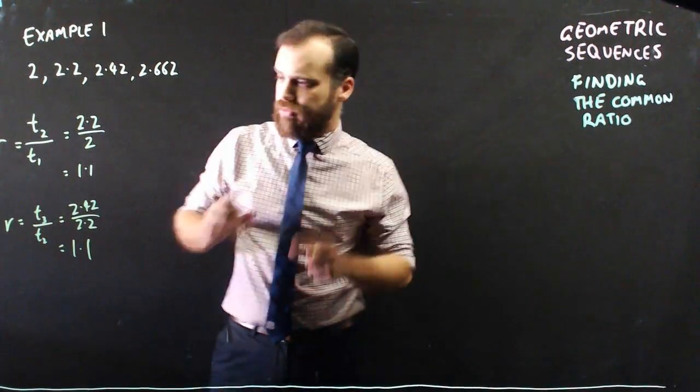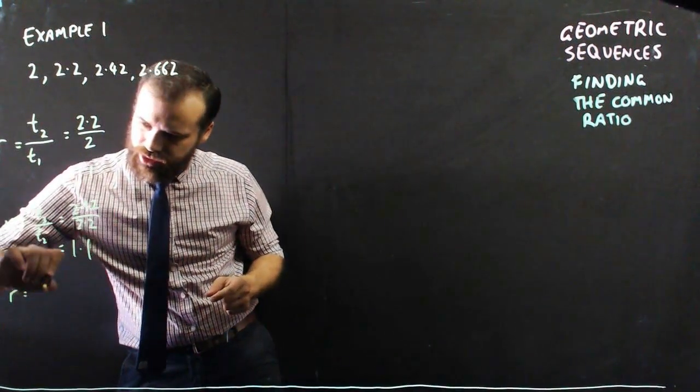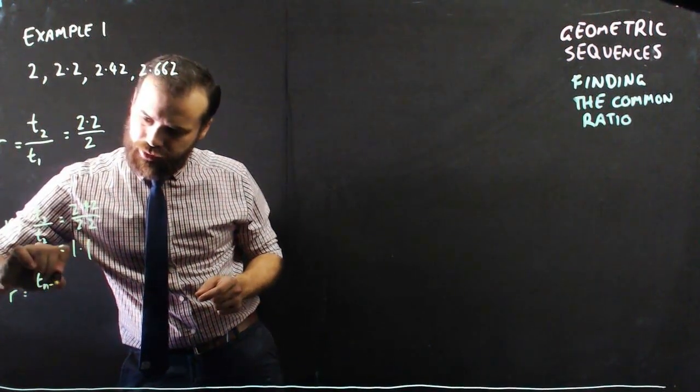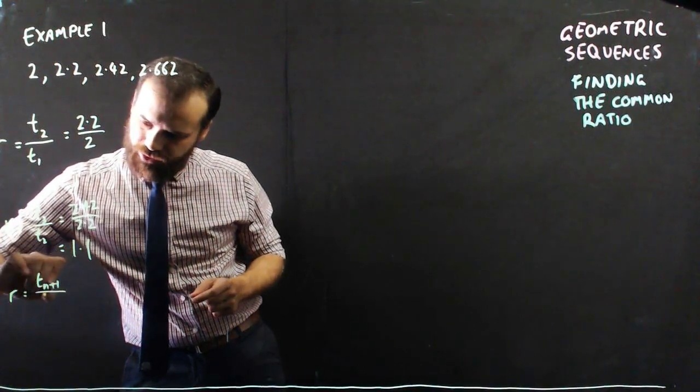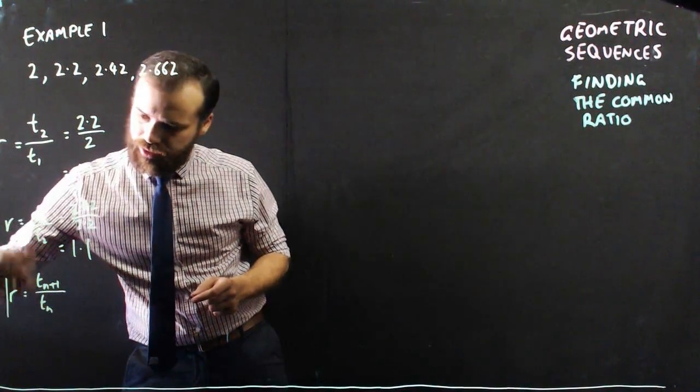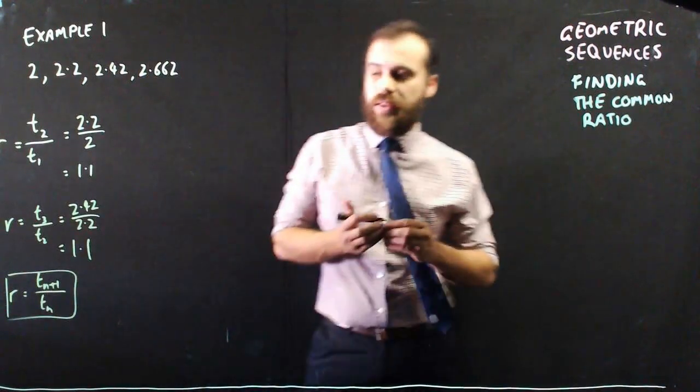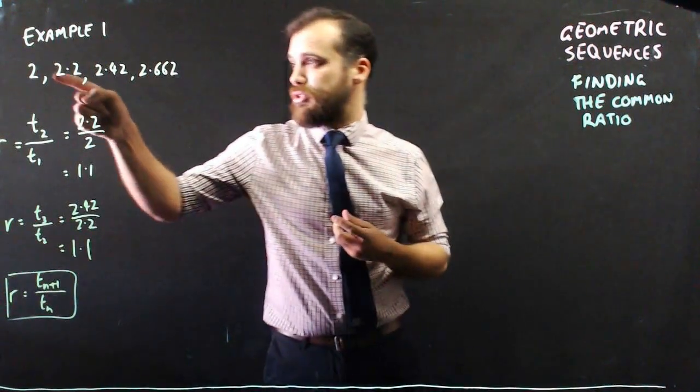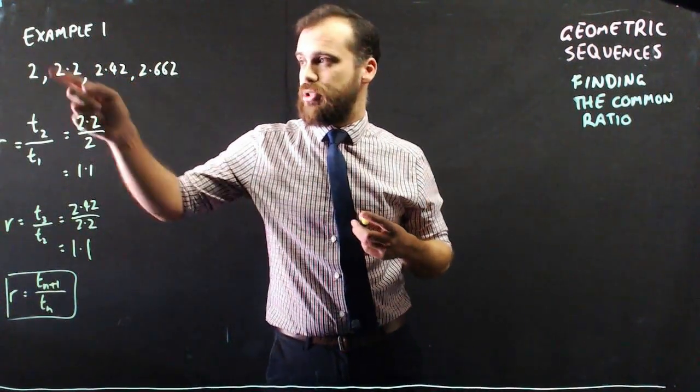But more generally, the common ratio is equal to term n plus 1 over term n. Now that's very useful as long as you're told all of the terms, term 1, term 2, term 3, term 4.